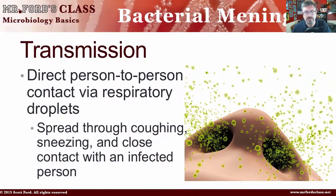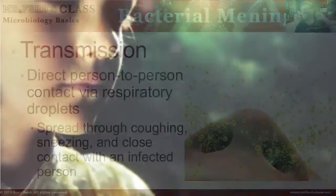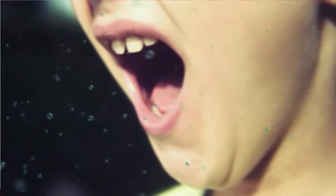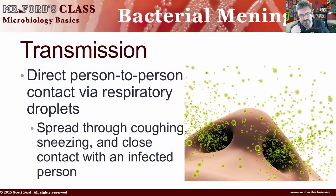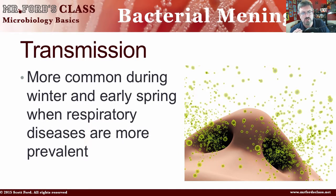So how is this sent from one person to another? It's direct person-to-person contact via respiratory droplets. Person-to-person respiratory droplets — this is a common way to transmit. If you think about where it's located, back in the nasal and oral area, when you sneeze or blow your nose, it's shedding that bacteria. So it's spread through coughing, sneezing, and close contact with an affected person. It's more common during winter and early spring when respiratory diseases are most prevalent.